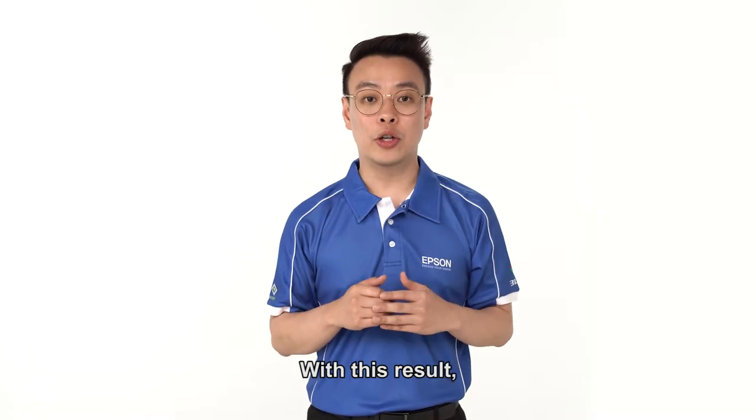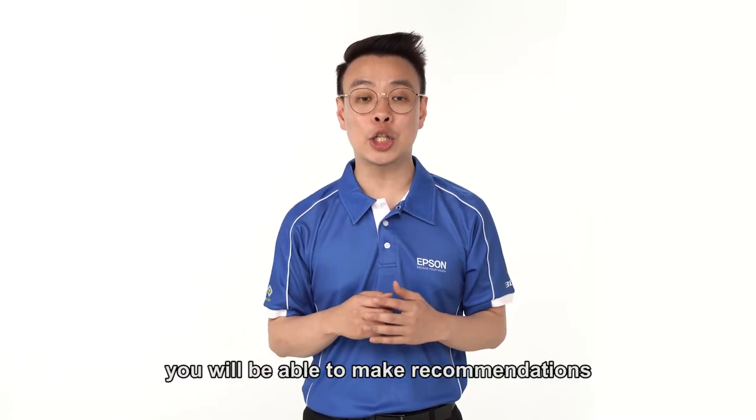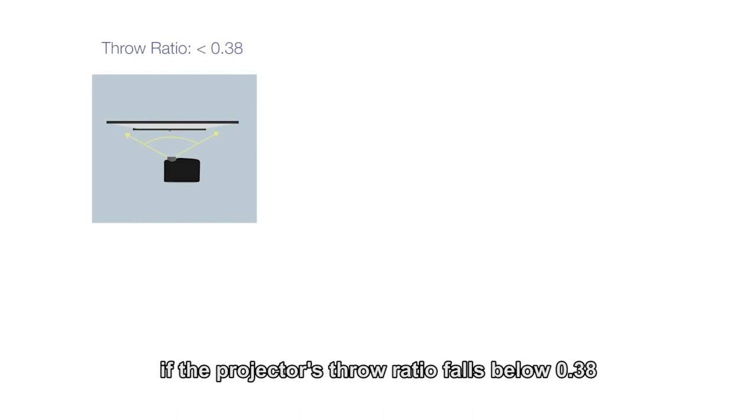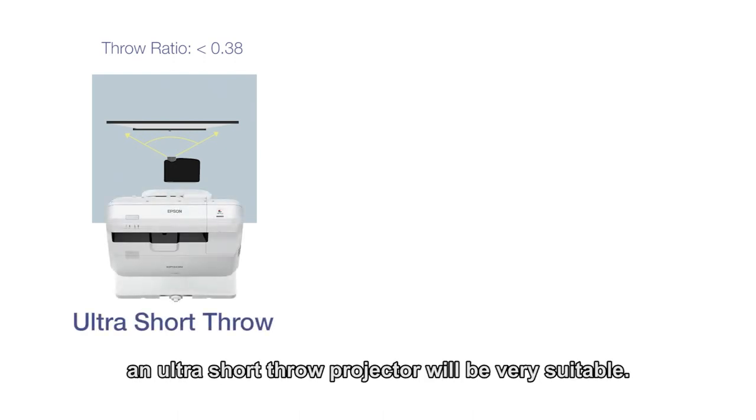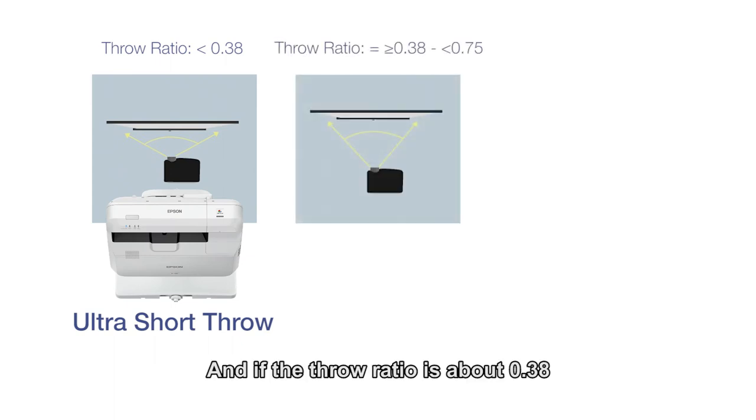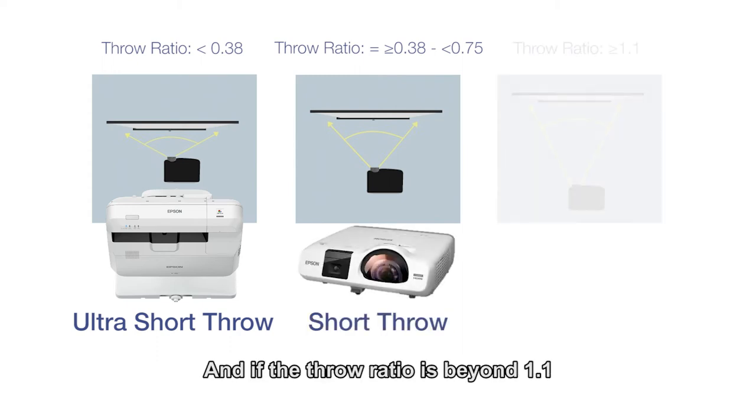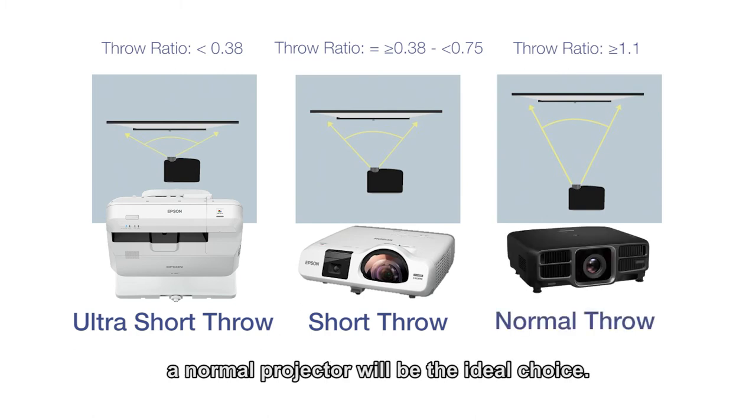With this result, you will be able to make recommendations on the type of projector based on the respective throw ratios. For example, if the projector throw ratio falls below 0.38, an ultra short throw projector will be very suitable. And if the throw ratio is about 0.38 but less than 0.75, a short throw projector would be recommended. And if the throw ratio is beyond 1.1, a normal projector will be the ideal choice.